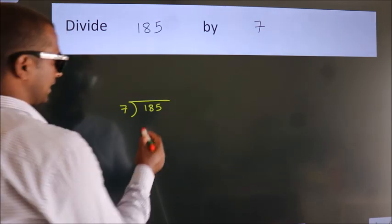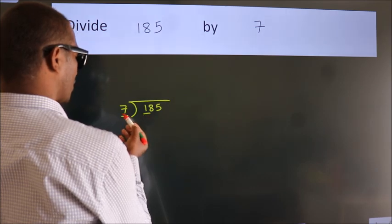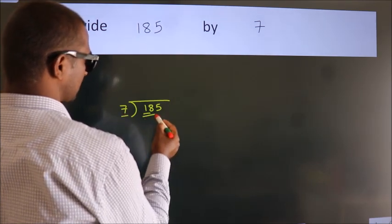Next, here we have 1, here 7. 1 is smaller than 7, so we should take 2 numbers: 18.